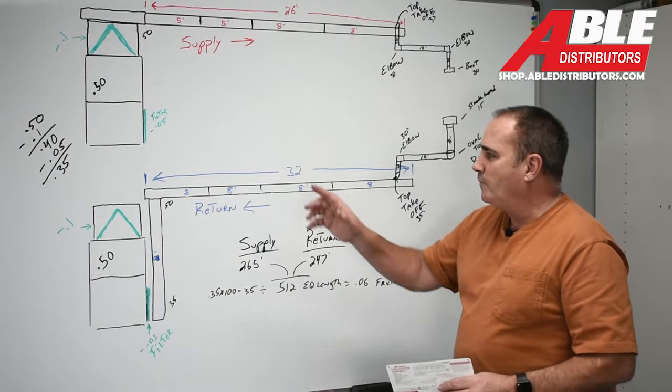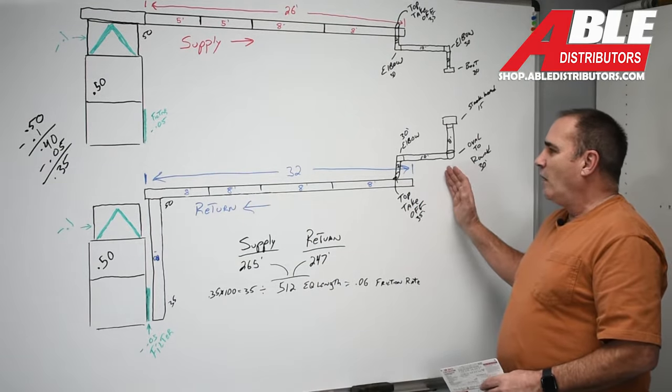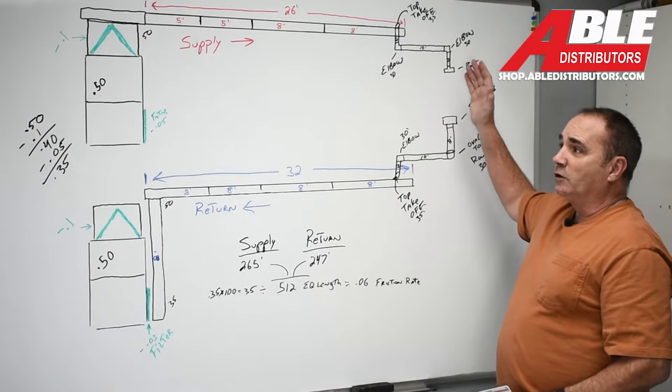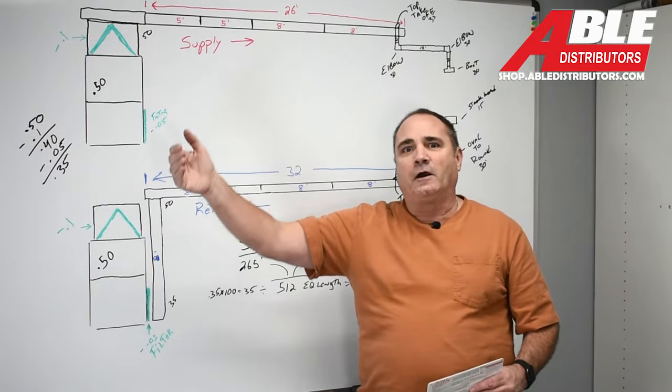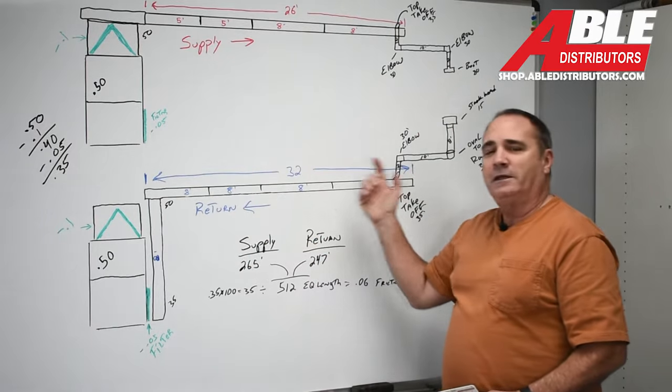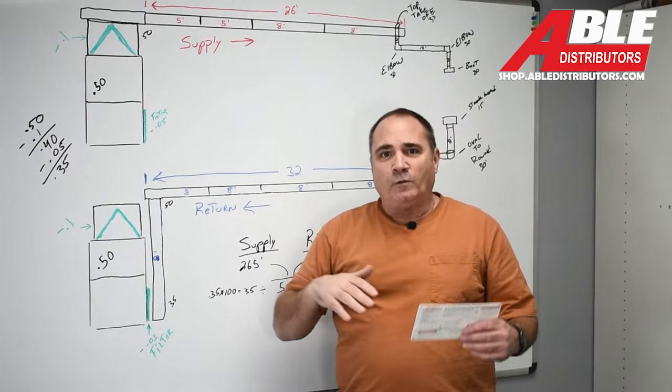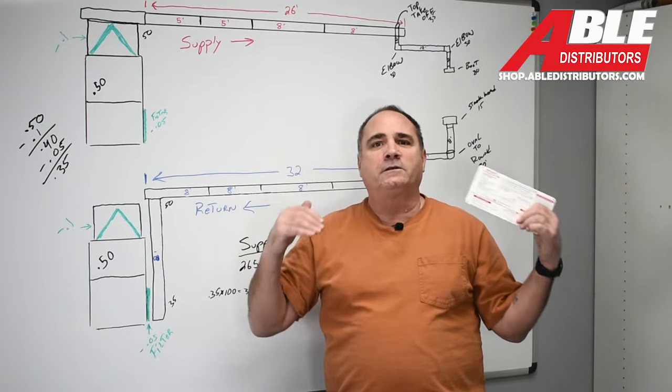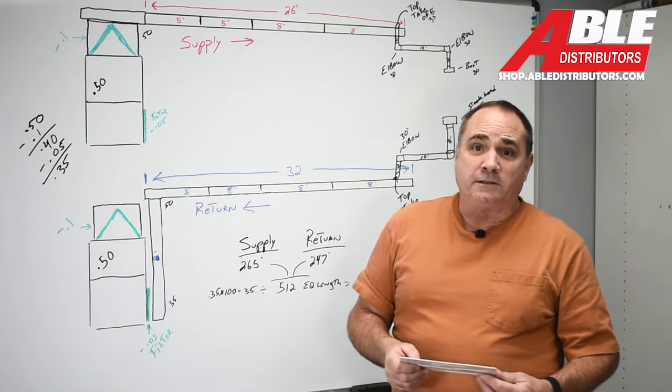The reason we do one longest supply and one longest return is because if we can get air to the hardest one, we know we can get it every place in between. So we always calculate to the farthest, the hardest one to get to, and that's the way it's done.